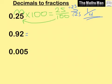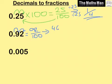For 0.92, we do the same — multiply by 100 to get 92, giving us 92 over 100. We can cancel this down: 92 over 100 simplifies to 46 over 50, then further to 23 over 25.